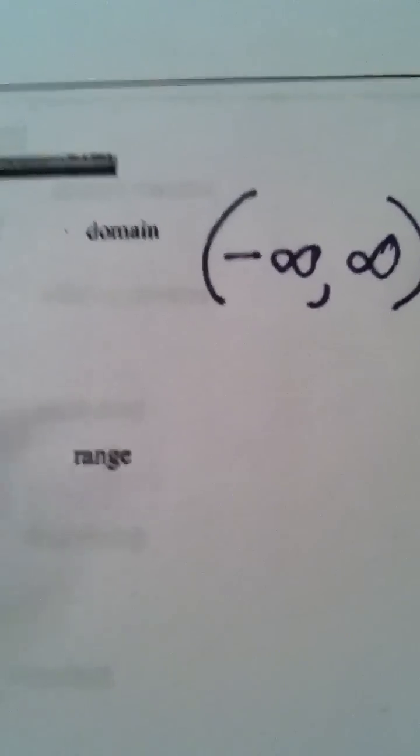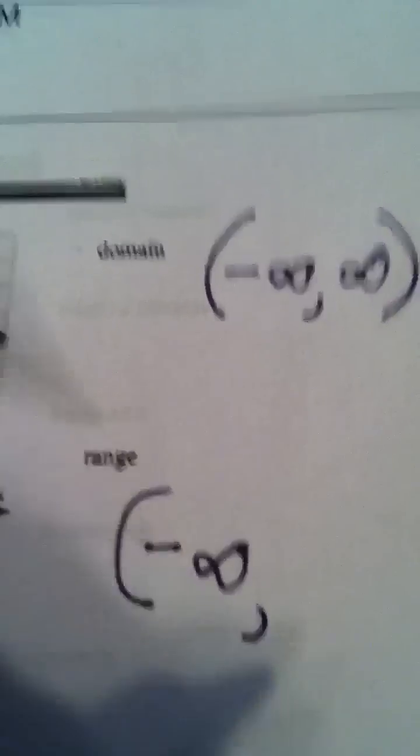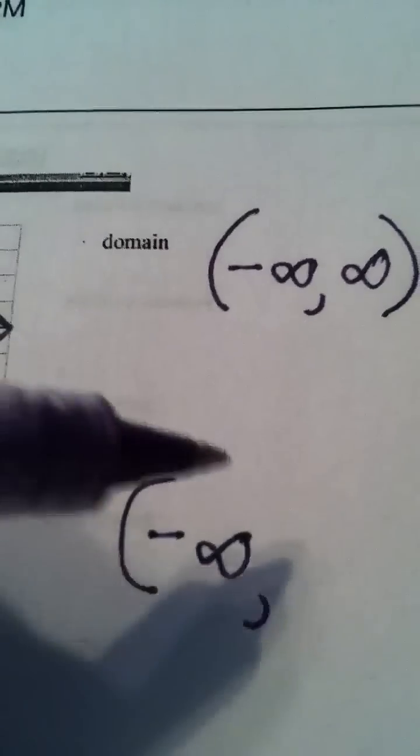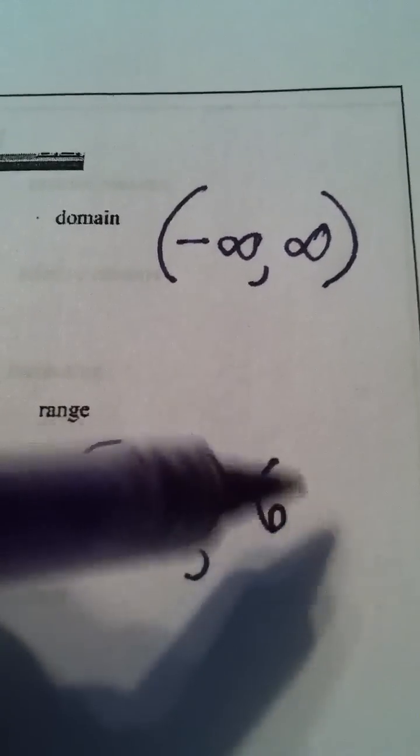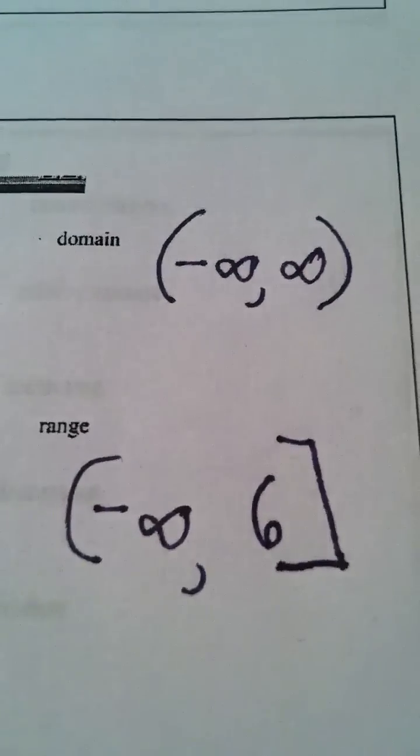So, my range, I'm coming from negative infinity, that's from bottom, but the top y value I pick up is 6, and of course it is included. That's why we put a bracket.